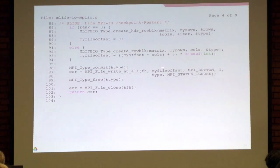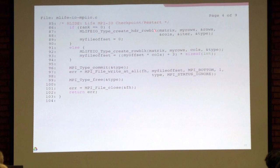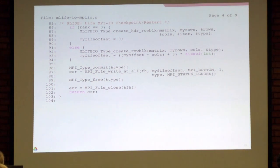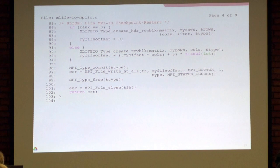We commit those types, then call MPI_File_write_at_all. Everybody passes in their own independent offsets so they're writing in different regions. MPI_BOTTOM is a way of saying the address is already in the type. Rank zero writes out this header plus its block of rows starting at offset zero; everyone else writes out their block of rows at an appropriate offset. Then we free the type and close the file. That's writing a relatively simple output format in MPI-IO using collective functions — just three MPI-IO functions to write.